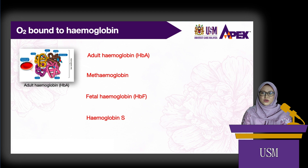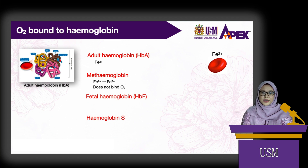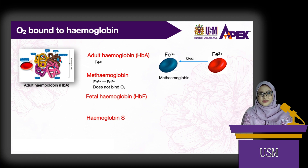In normal hemoglobin, the iron in the heme moiety must be in the ferrous state to be able to bind with oxygen. In methemoglobin, the iron component is in the ferric state, so methemoglobin does not bind oxygen. Methemoglobin can be caused by oxidation by nitrites or sulfonamides, or it can be congenital, whereby there is a deficiency of methemoglobin reductase.